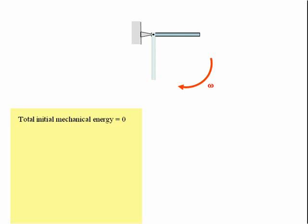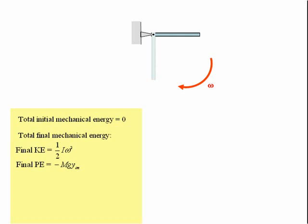Let's consider the total final mechanical energy when the rod has rotated into the vertical position. The final kinetic energy is just its rotational kinetic energy, which is ½Iω². And the final potential energy is equal to minus MgY_CM, where Y_CM is the distance moved by the centre of mass of the rod — that is just equal to L/2, so that's minus MgL/2, where L is the length of the rod.